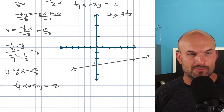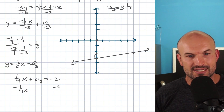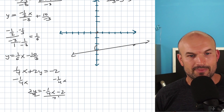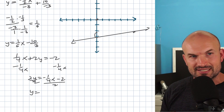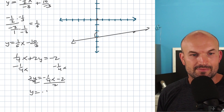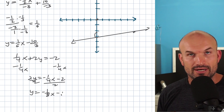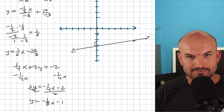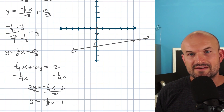Looking at the inverse operations, I subtract 1/4 x from both sides, leaving 2y equals negative 1/4 x minus 2. Then dividing by 2 on both sides — remember, dividing by 2 is the same as multiplying by 1/2 — that gives me negative 1/8 x. And 2 divided by negative 2 equals negative 1. So now I have y equals negative 1/8 x minus 1. I start at the y-intercept negative 1, then go down 1 and over 8.